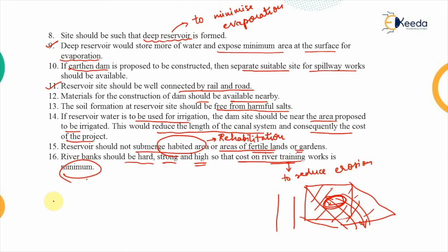Considering all of these factors, we select a suitable site for the construction of the reservoir and provide the dam across the river at that site. Once the pool of water is constructed, there are different water zones available within the reservoir, which we will see in the next class.